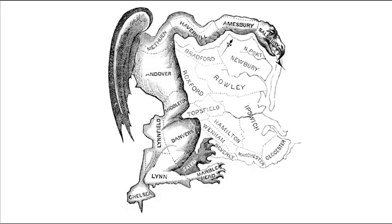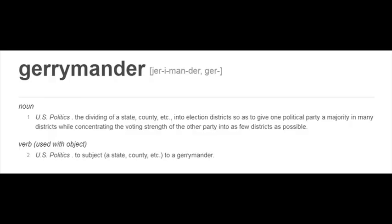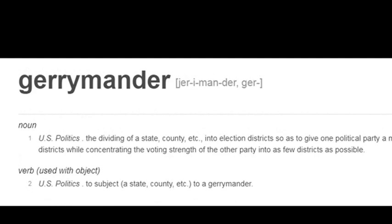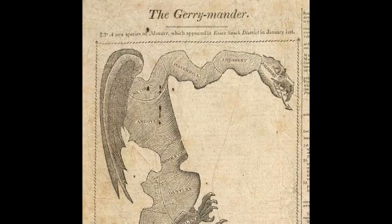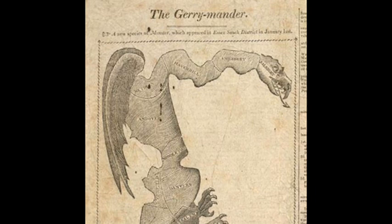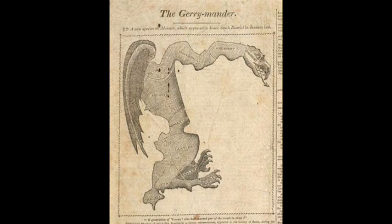The term gerrymander is therefore a portmanteau of Elbridge Gerry's surname and salamander. The cartoon appeared in the Gazette with gerrymander as its title, though who coined the term itself is unknown.